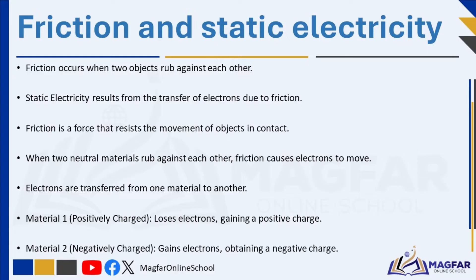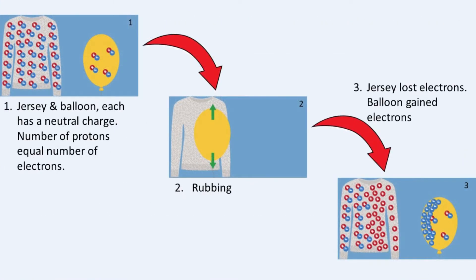The first material now has more protons than electrons, resulting in a positive charge on its surface — it is now positively charged as it has lost electrons. The second material now has more electrons than protons, resulting in a negative charge on its surface — it is now negatively charged as it has gained electrons. Friction between materials like plastic, perspex, glass, nylon, wool, and silk causes electrons to be transferred.